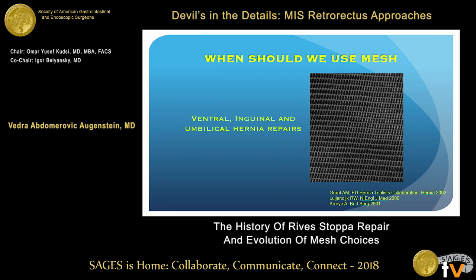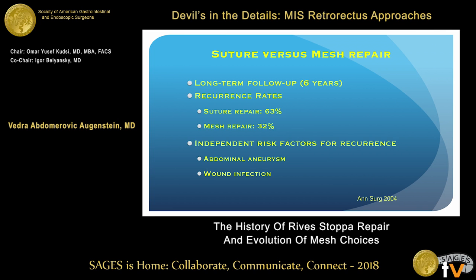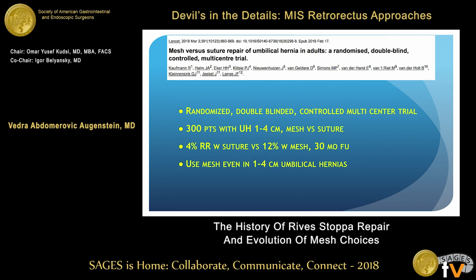Who should we use mesh in? Switching to the evolution of mesh — there is a lot of evidence that we should be using mesh essentially every hernia that we repair. I can't talk about mesh repair without mentioning the Lewendijk prospective randomized trial with six-year follow-up, basically significantly reducing the risk of hernia recurrence when you use mesh. Even newer data, just recently from Lancet — using mesh in even the smallest umbilical hernia defects: patients with one to four centimeter defects in this study from the Netherlands did a lot better.